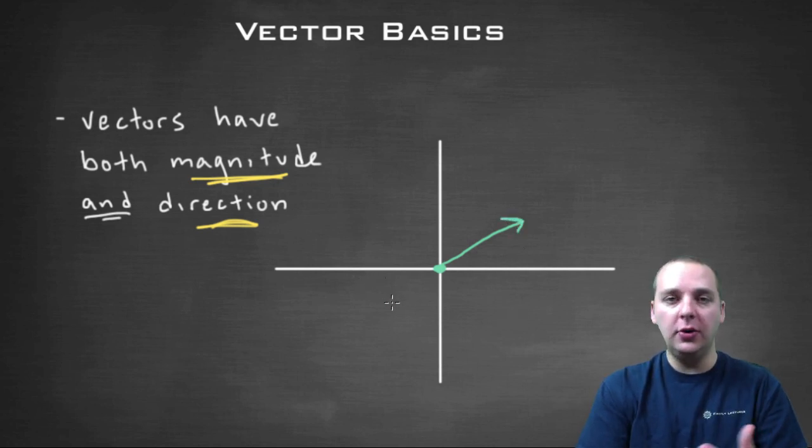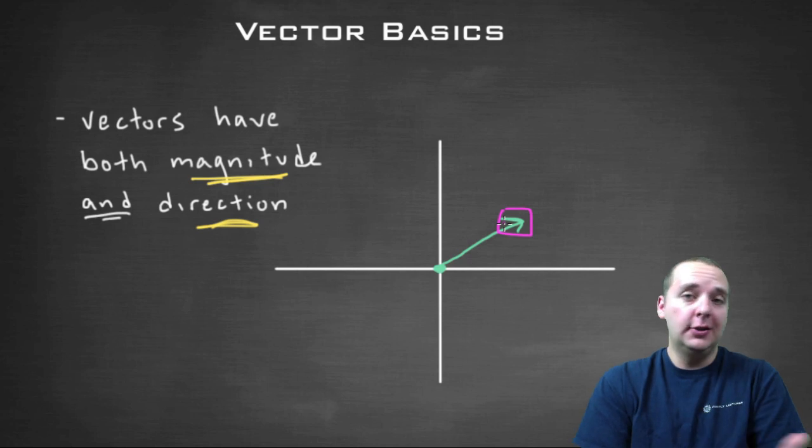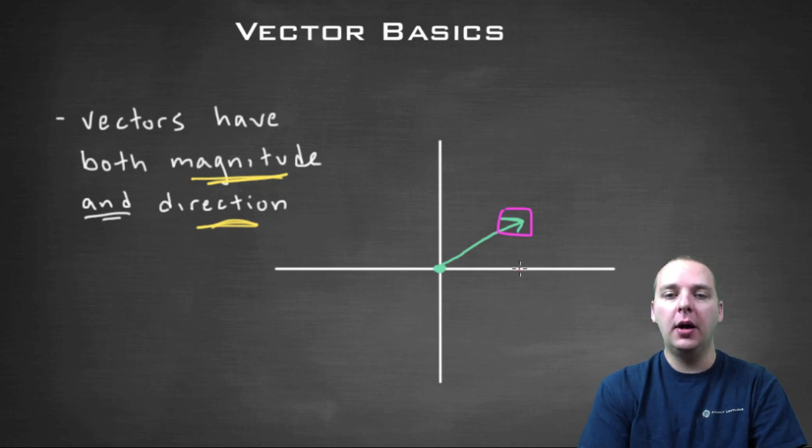Now do I have to draw it at the origin? Technically no, I don't, but convention is this is usually what we do unless there's some reason not to. Now a benefit to doing this, is this actually now defines the vector just in terms of the terminal point, because we're going to assume the initial point is zero, zero. So the terminal point actually just becomes the important point.